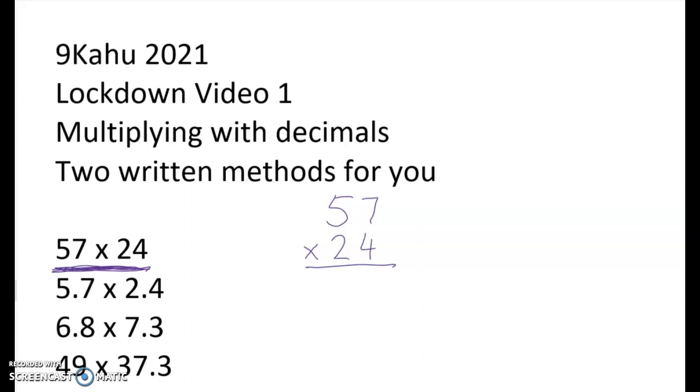I go 4 times 7 is 28. I write down the 8 and I carry over the 2. 4 times 5 is 20 plus the 2 gives me 22. So I write down 22. Next I'm multiplying by this 2 here which means 2 tens. I put a 0 down here to times everything by 10. So now I have 2 sevens are 14. I write down the 4 and I carry the 1. 2 fives are 10 plus the 1 gives me 11. Now I add up what I've got: 8, 6, 3, 1. So 57 times 24 is equal to 1368.